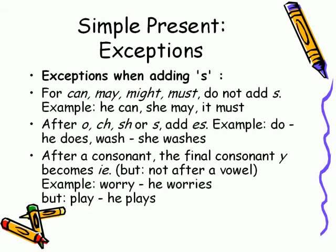Simple present exceptions when adding S. For modal verbs — can, may, might, must — do not add S. Example: he can, she may, it must. After O, CH, SH, or S, add ES. Example: 'do' becomes 'he does', 'wash' becomes 'she washes'.